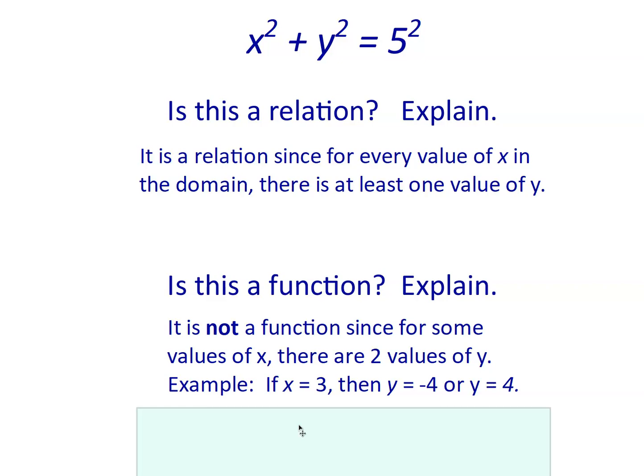But in this case, there are two values of y for most of the values of x. For example, if x equals 3, 3 squared is 9. So y could be 4, because 4 squared is 16, and 9 plus 16 equals 25. But y could also be negative 4. 3 squared is 9. Negative 4 squared is also positive 16. So there are two values of y for that one value of x. So in this case, it's a relation, but not a function.